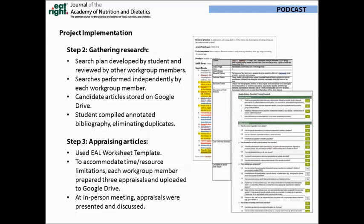The next steps in the process are to gather research and appraise the articles. Using the Evidence Analysis Library search plan template, the student developed our strategy. This included each of the workgroup members performing independent searches and storing PDFs of candidate articles on Google Drive. As the lead analyst, the student assessed all citations and abstracts, filtered articles that did not meet the eligibility requirements, compiled an annotated bibliography of all candidate articles, and eliminated duplicates. We then set out to appraise the articles. For an Academy project, the quality of studies is assessed by two independent reviewers. For this project, each of us was assigned three articles.